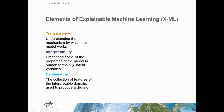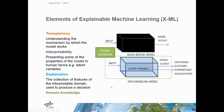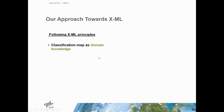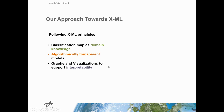And finally, producing explainable results — results that are verifiable by domain experts — and the integration of domain knowledge is also considered important in explainability. In our approach towards explainable machine learning, we have followed these principles by using classification maps as domain knowledge, by using algorithmically transparent models, and by producing graphs and visualizations to support interpretability.